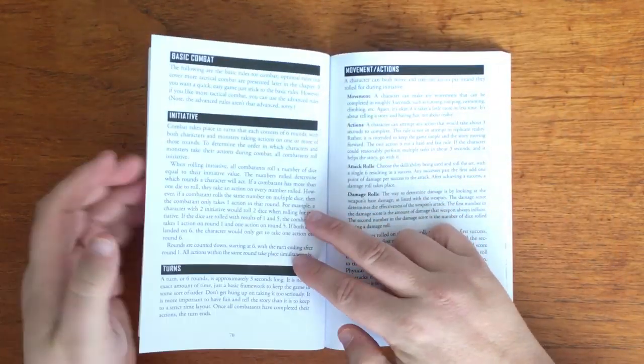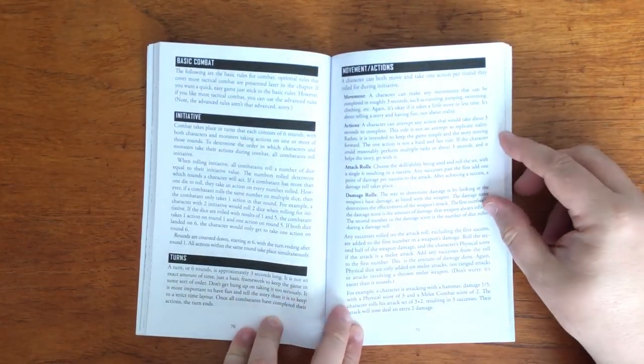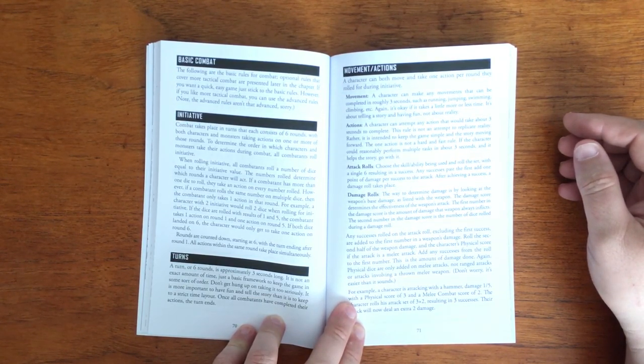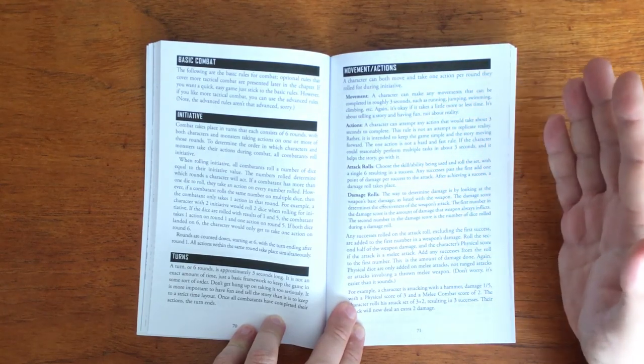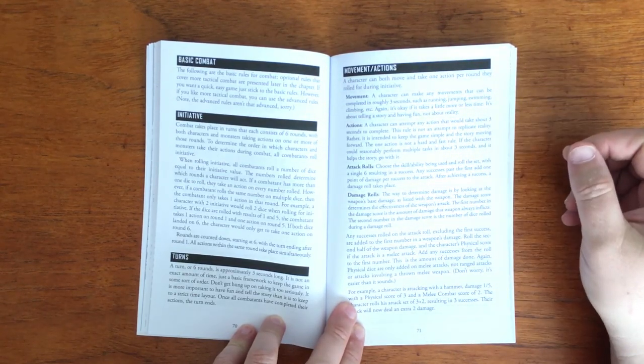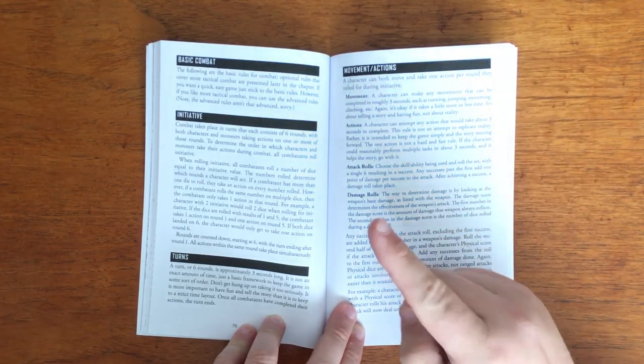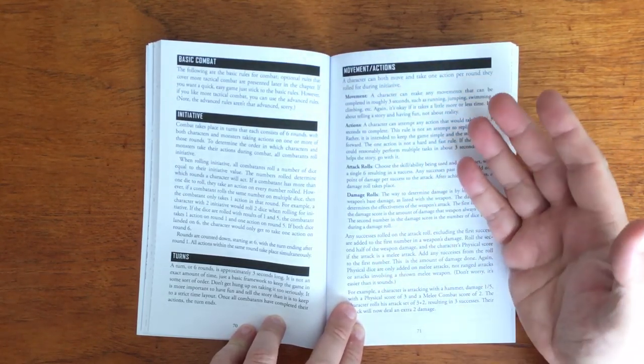The basic combat is very much in the same vein. Initiative is followed over 6 3-second turns. To see when you act you roll the amount of d6s you have for initiative and each different number you get means you act on that turn. For example, if you had a 4 in initiative and rolled 2 ones, a 4 and a 6, you are going round 1, 4 and 6. Duplicates are ignored.